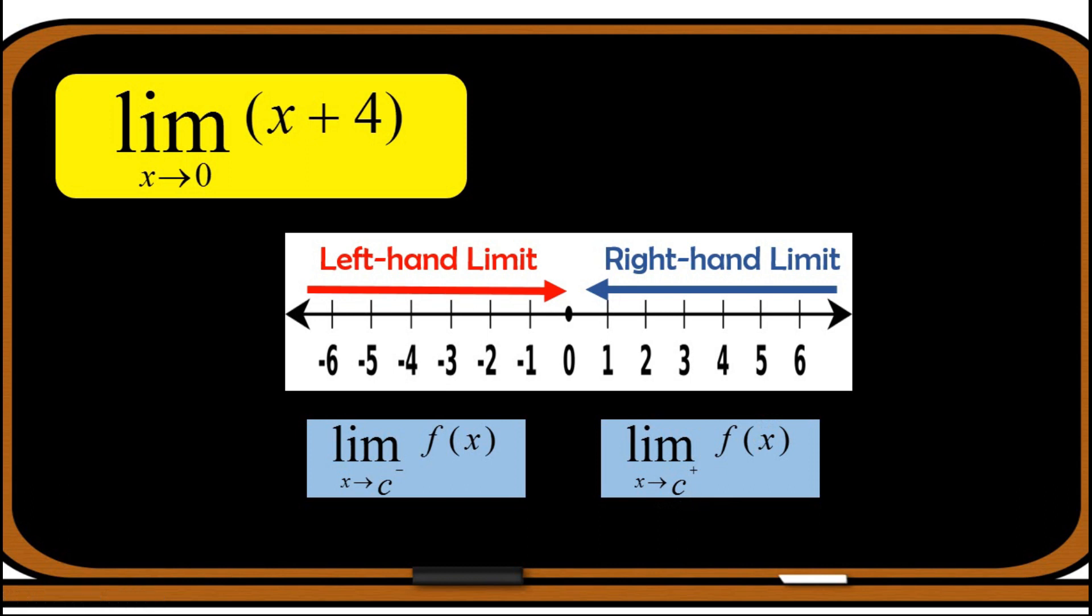For the limit of the function to exist, the left-hand limit must have the same value as the right-hand limit. In other words, for a limit L to exist, the limits from the left and from the right must both exist and be equal to the value of L.